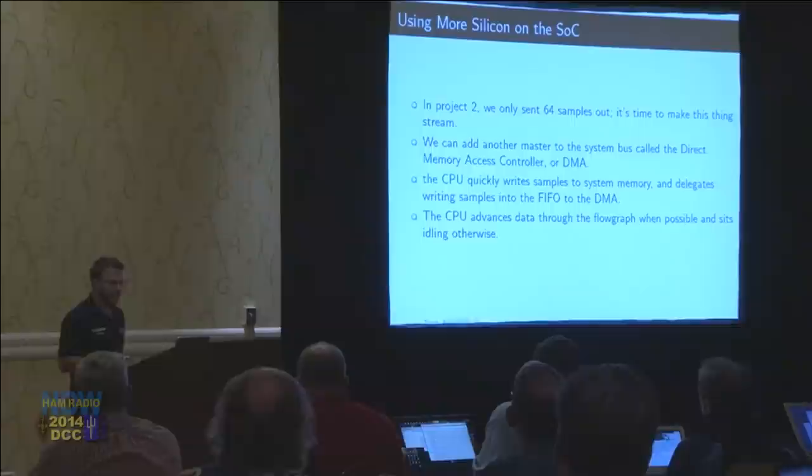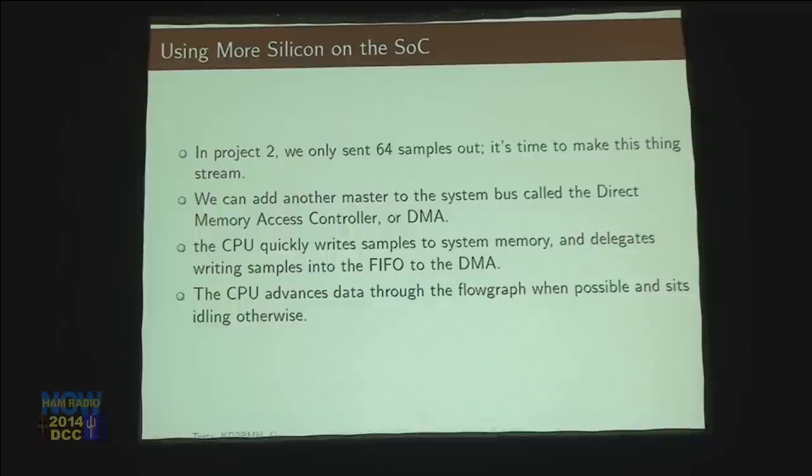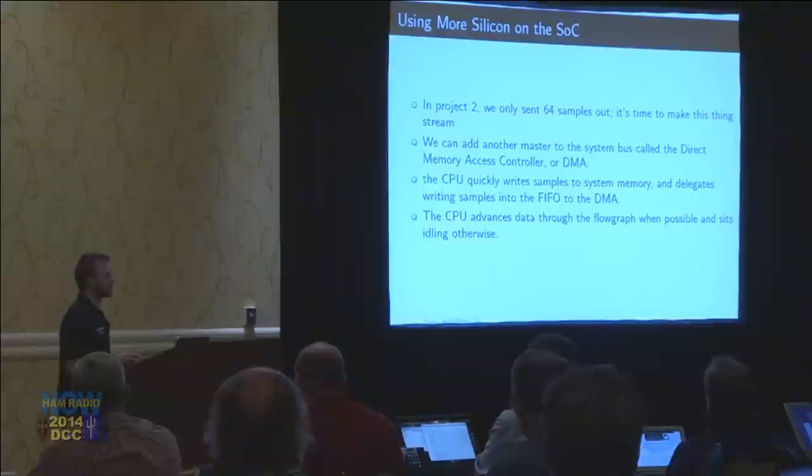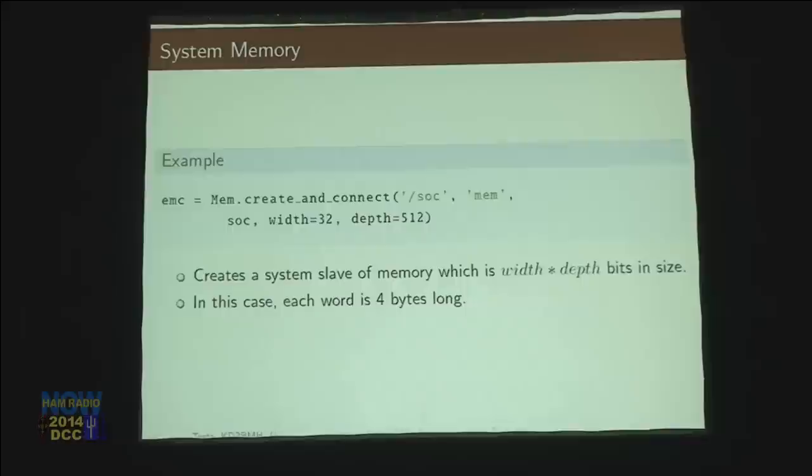In project two, we only sent 64 samples out, and it's time to start streaming things. What's going to run on the processor is a flow graph similar to GNU Radio — how GNU Radio works — but a very simple, small one that doesn't have all the features of GNU Radio but does function.